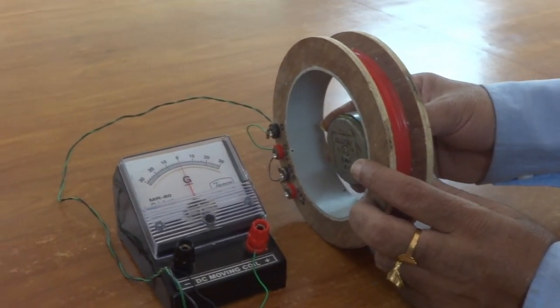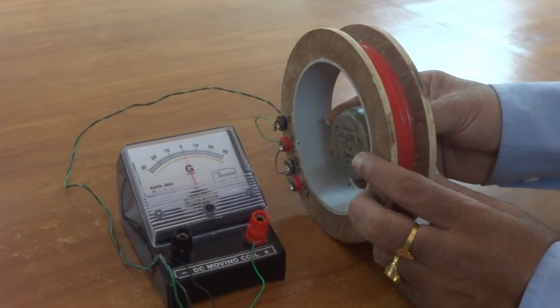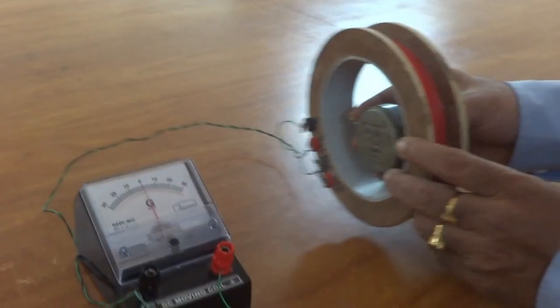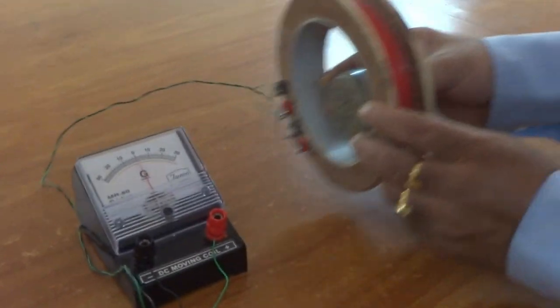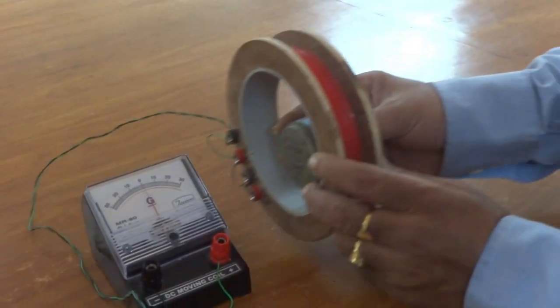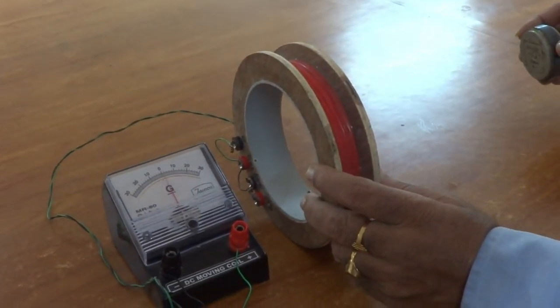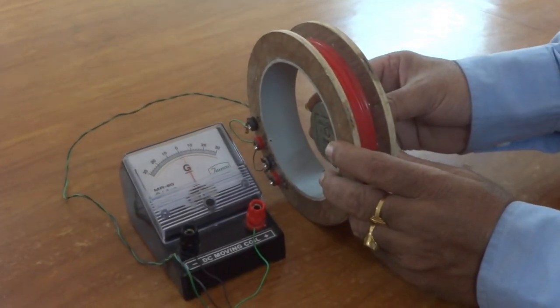Now, if I keep the magnet inside at rest, there is no deflection in the galvanometer. When the two are moved together, that is, here the relative velocity is zero, then also the galvanometer shows zero deflection.